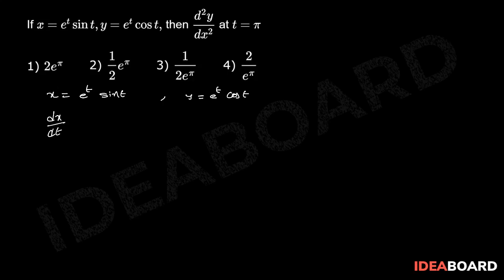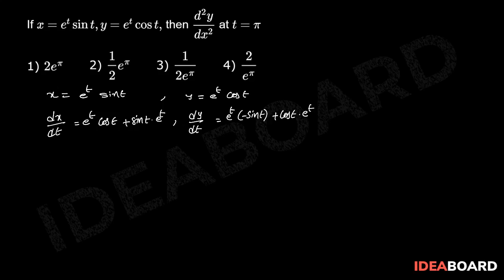dx/dt equals e power t times (cos t + sin t), applying the product rule: derivative of sin t is cos t, plus sin t times derivative of e power t which is e power t.